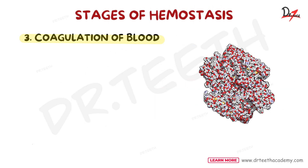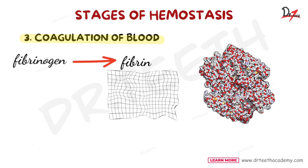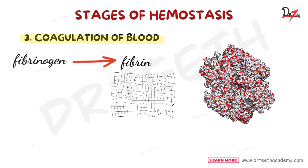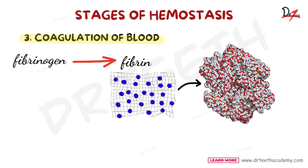Then we have the coagulation of blood. Fibrinogen turns into fibrin like a net during this stage. Fibrin threads connect to the loose platelet plug, which tightens the plug, completely blocking the damaged blood vessel and preventing further blood loss. We will cover coagulation of blood in detail in the next video.